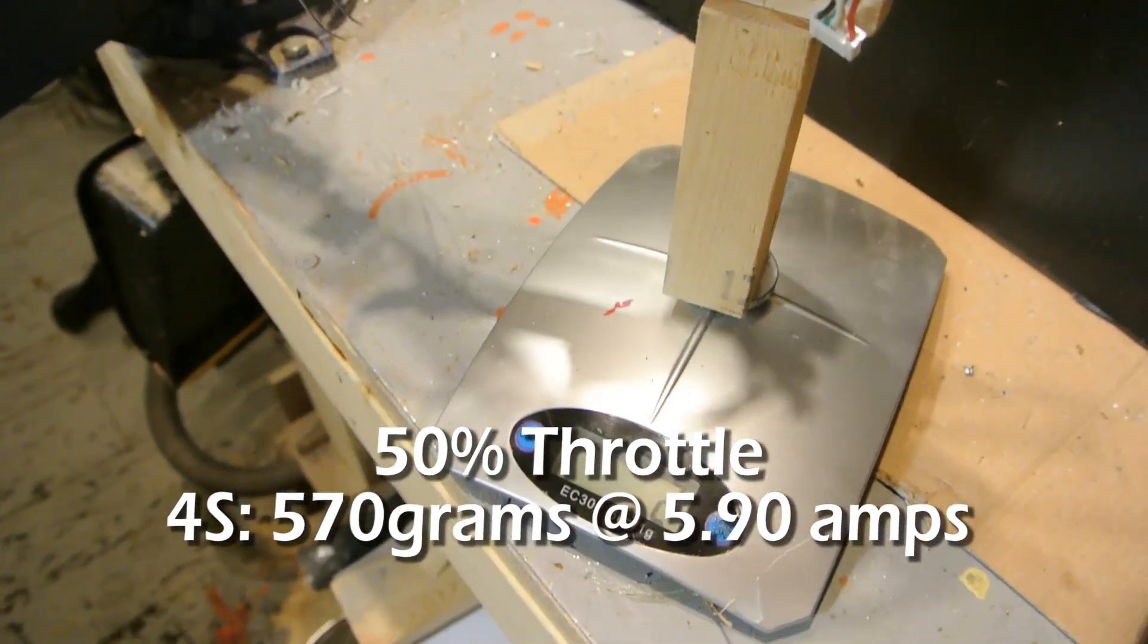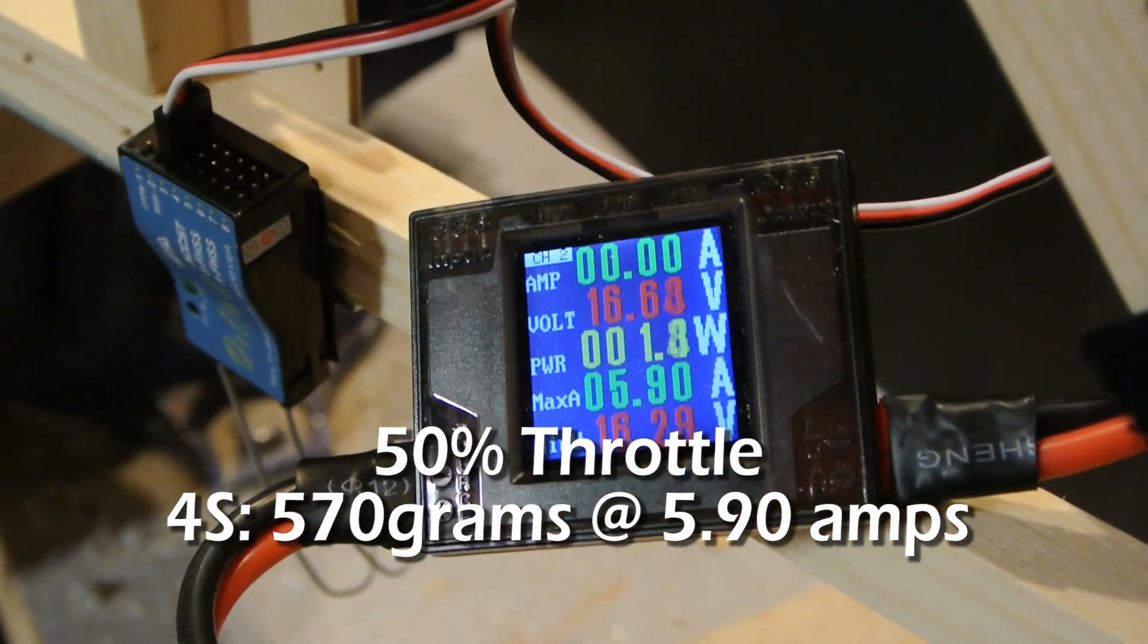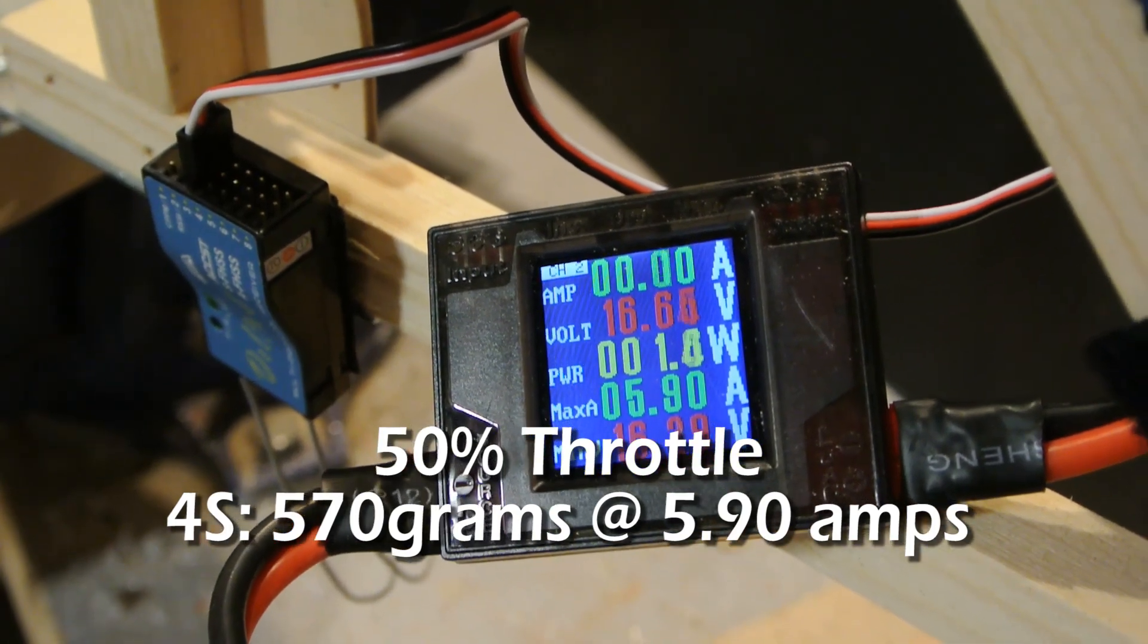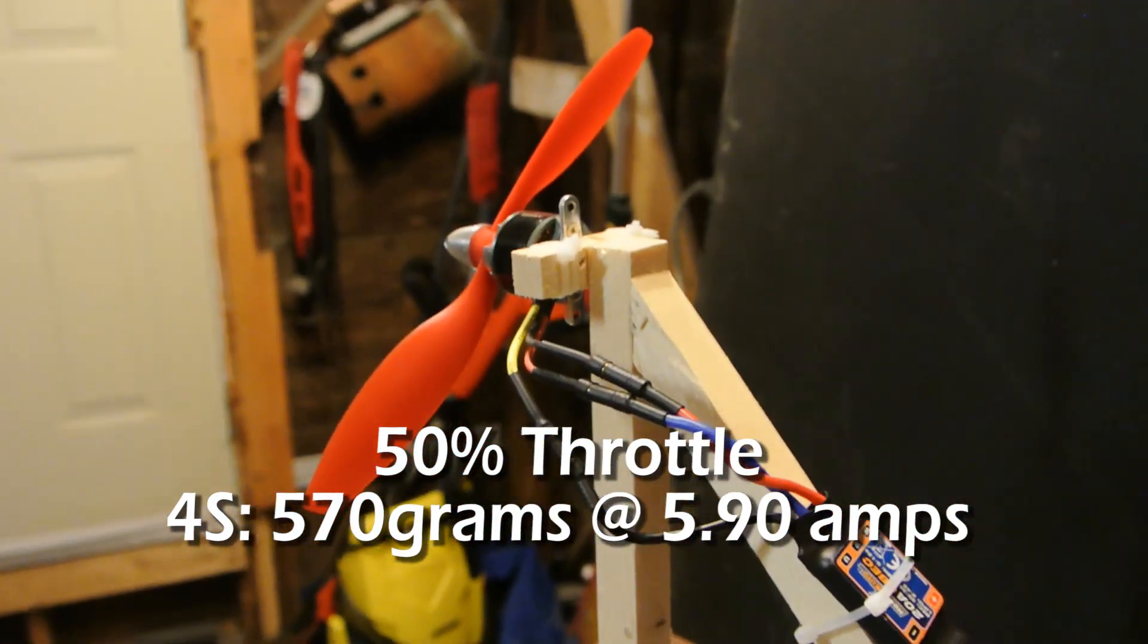So our thrust was around 570 and our max amps was 5.9, and again this is with an 8 by 4.5 inch prop.